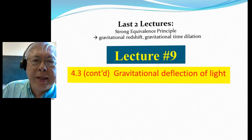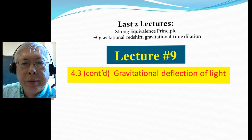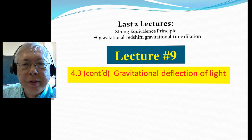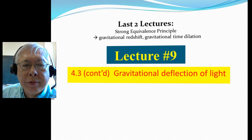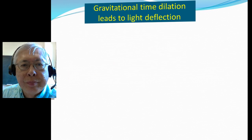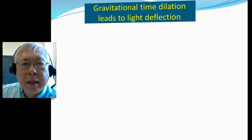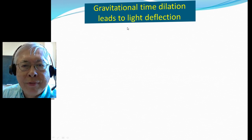We're on to lecture number 9. In the last two lectures, we talked about how the Strong Equivalence Principle implies gravitational redshift and gravitational time dilation. We're going to continue this in section 4.3 and talk about the gravitational deflection of light. Basically, we note that gravitational time dilation can lead to light deflection.